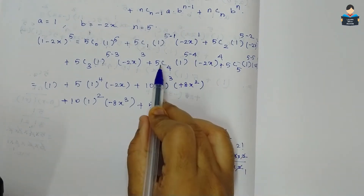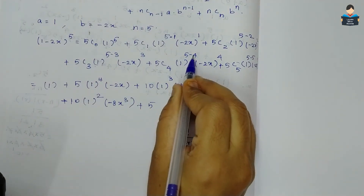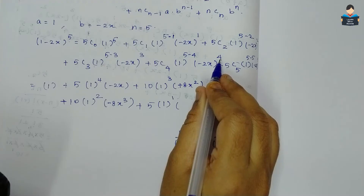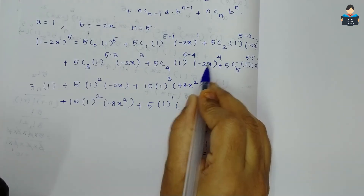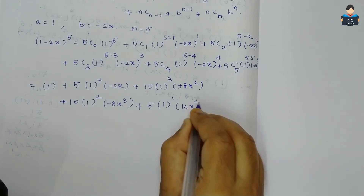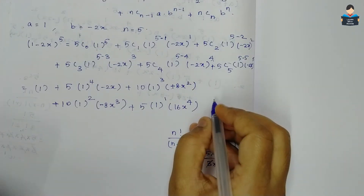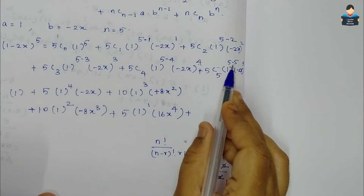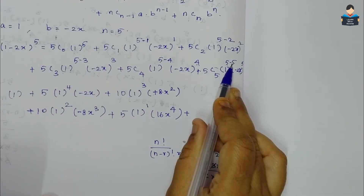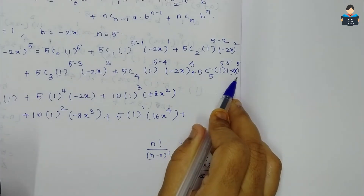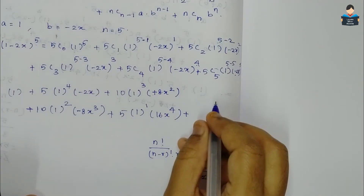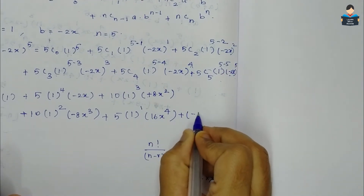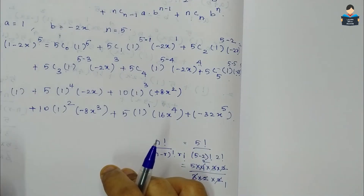For 5C4 = 5: (-2x)^4 = 16x^4, and since the power is even the sign is positive, so we get 5·1·16x^4 = 80x^4. For 5C5 = 1: 1^0 = 1, and (-2x)^5 = -32x^5 since the power is odd, giving -32x^5.